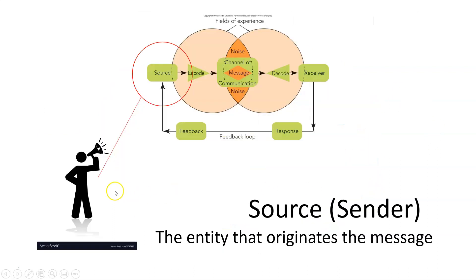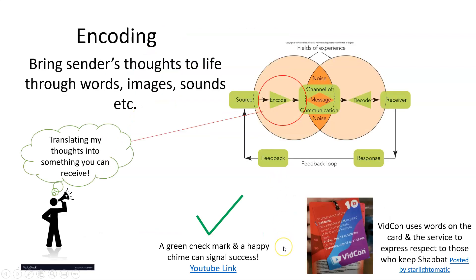So first we have the source or sender of the message — this is the entity that originates the message. The message must then be encoded. The process of encoding is how we bring that sender's thoughts to life through words, images, sounds, and other symbols.